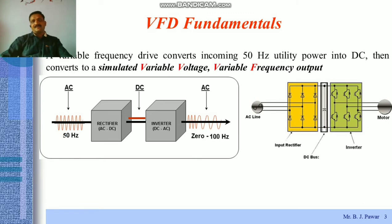So that VFD fundamentals, it is basically very simple. VFD converts incoming 50 Hz utility power of AC, that is 230 mains, into DC and then converts to a simulated variable voltage and variable frequency output. Now see, by this simple block diagram, you can easily analyze as shown over here AC input, it is shown as 50 Hz. It is applied to the rectifier.